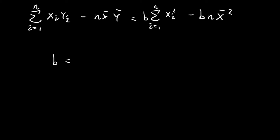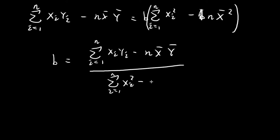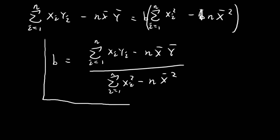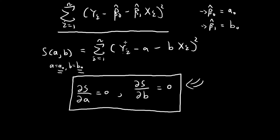Now I can pull B outside of a bracket, and then divide this term over to the other side. So B is going to be equal to the numerator expression divided by the sum of xi squared minus n times the sample mean of x squared. This is the value of B that minimizes the function S — this is B0.